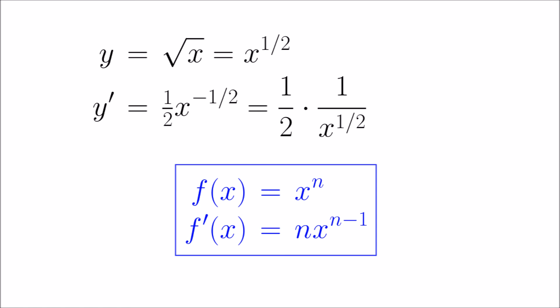x to the power of one half is again the square root of x, and thus a third way of expressing the answer is one divided by two times the square root of x.